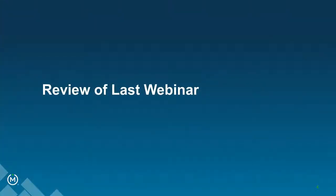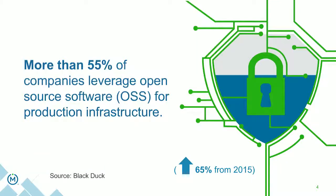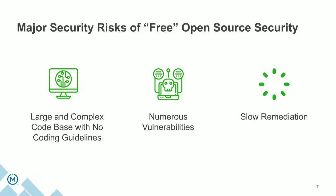Today we're going to be talking about compliance and support. For those of you that missed the last webinar, what we discussed was the risks around using open source security for your applications, for embedded systems, for IoT, for industrial control systems. More than half of companies leverage open source software for production, and when we look at some of the risks out there, part of it has to do with the large code base — especially in software such as OpenSSL — the vulnerabilities that emerge, and the time it takes to actually remedy and patch those vulnerabilities.